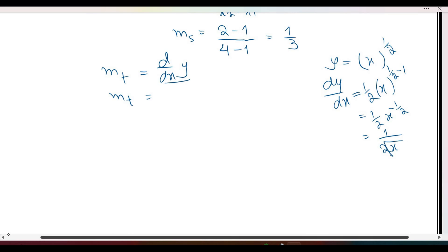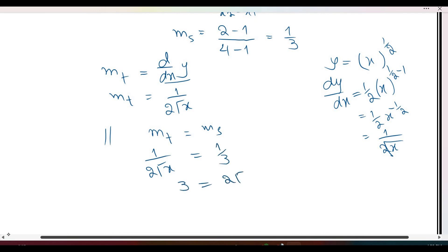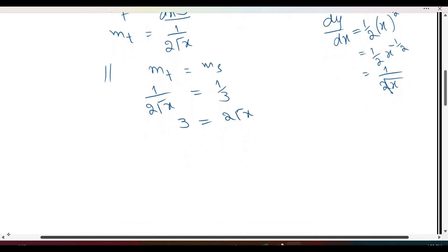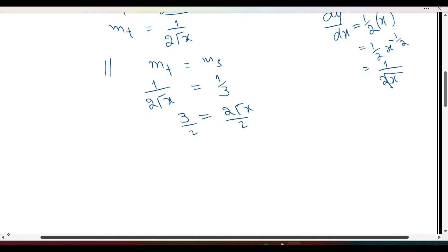So the derivative is 1 divided by 2 times square root of x. Because the lines are parallel, the slope of the tangent line equals the slope of the secant line, which is 1/3. Cross multiplying, we get 3 divided by 2 equal to square root of x, and solving further by cross multiplying gives us the x-value.